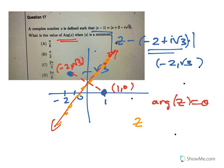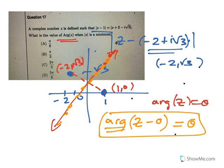Arg z means the angle - when z moves, we want to know what that angle is when z moves along this line. Z's moving along this line, and it's when the minimum distance, that's what that is.